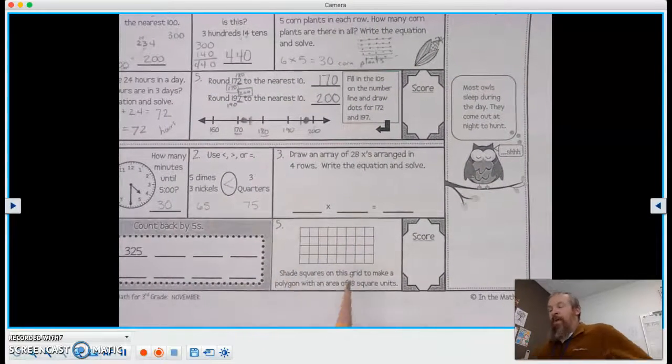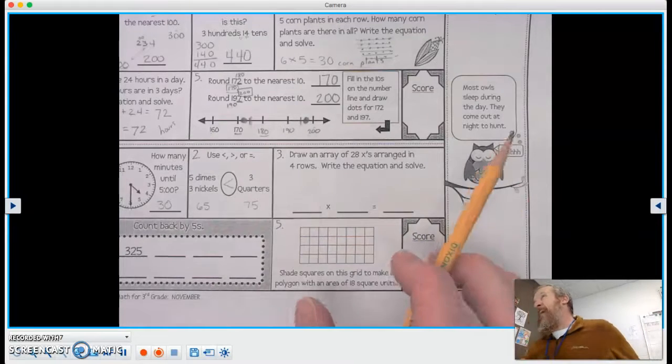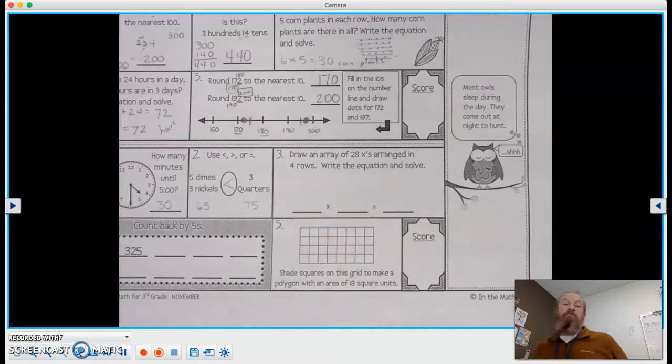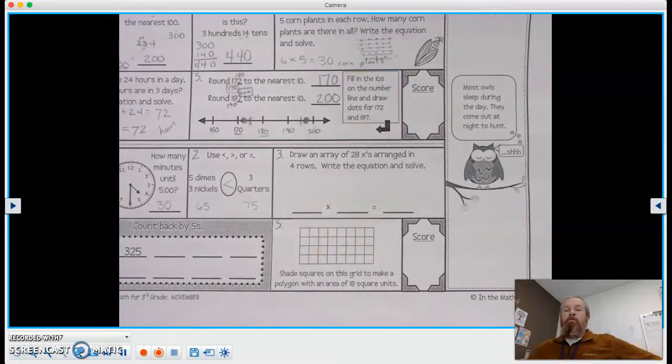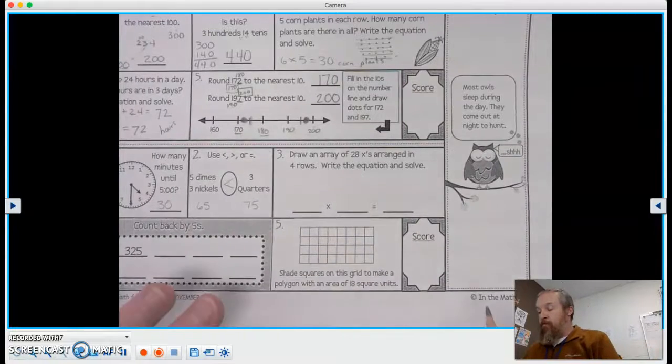Here's a tricky one. It says, draw an array of 28 x's arranged in four rows. Write the equation and solve. So let's make some x's.